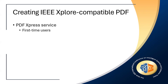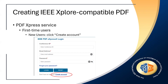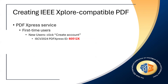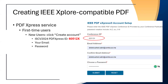If it is your first time using PDF Express, you should first create a new account. To do that, once on the PDF Express website, click create account. You will be asked to fill in information about your new account and the conference PDF Express ID. You should use the IESCV2024 conference PDF Express ID sent by email, and of course your email and your password. Click the button submit to create your account.